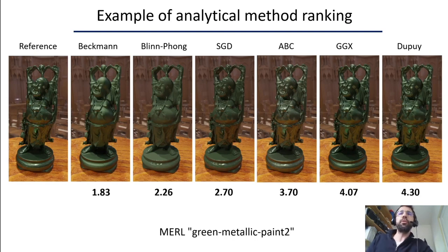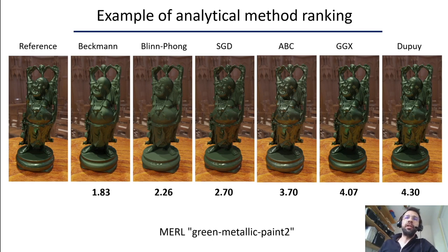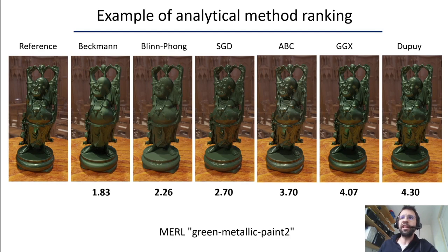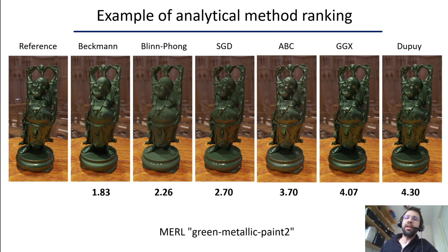Here is the first example of a visual result. For the green metallic paint 2 material, the score is shown at the bottom and the analytical model at the top. Beckmann and Blinn-Phong provide poor results with low scores, while GGX and Dupuis provide high scores — the appearance is almost exactly the same as the reference. ABC has an average score of 3.7: it has good metalness behavior, but the color is a bit too light compared to the reference. The hidden reference, also included in the experiment, obtained an average score of 4.5.